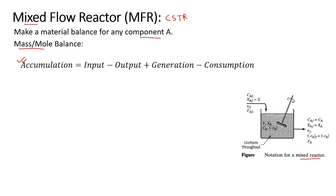Looking at this figure of a mixed flow reactor: the input stream has F_A0 as the input feed flow rate of component A, v_0 as the input volumetric flow rate, x_A0 as the input mass fraction of A (taken as zero for a sterile feed), and C_A0 as the input concentration of A. On the output side, the concentration is C_A or C_Af, mass fraction is x_A or x_Af, volumetric flow rate is v_f, and -r_A is the reaction rate (negative meaning A is consumed). F_A is the output feed flow rate of A.